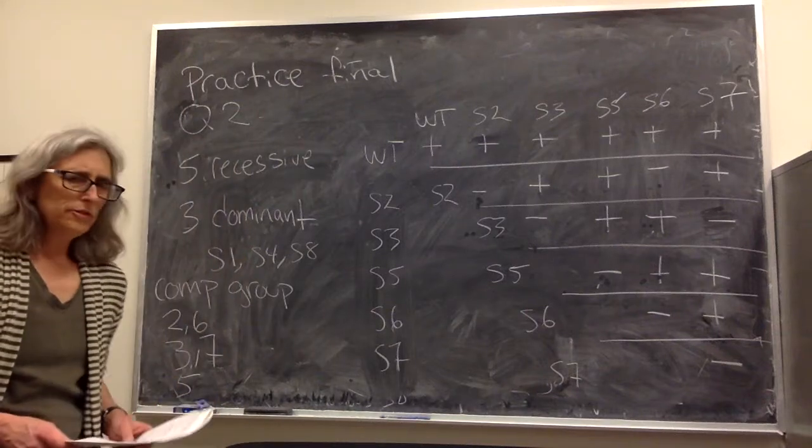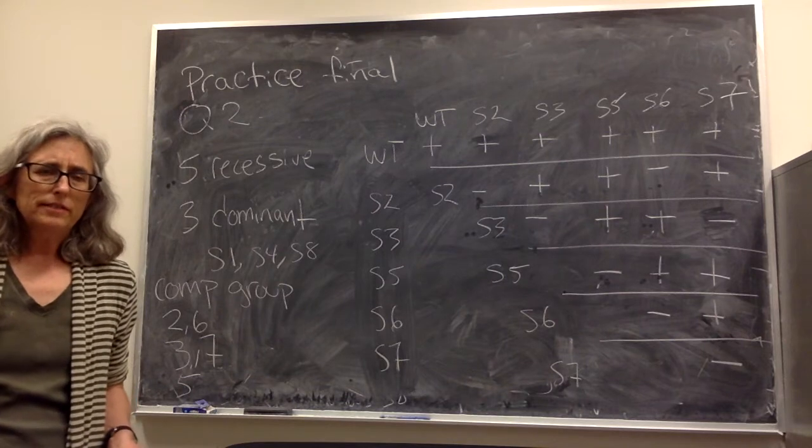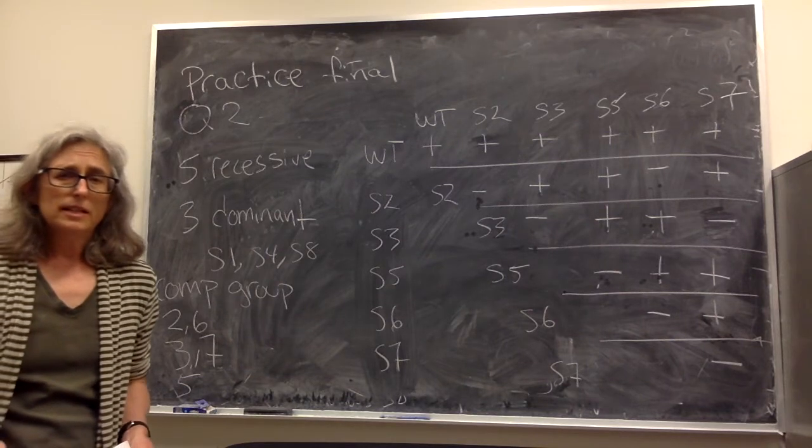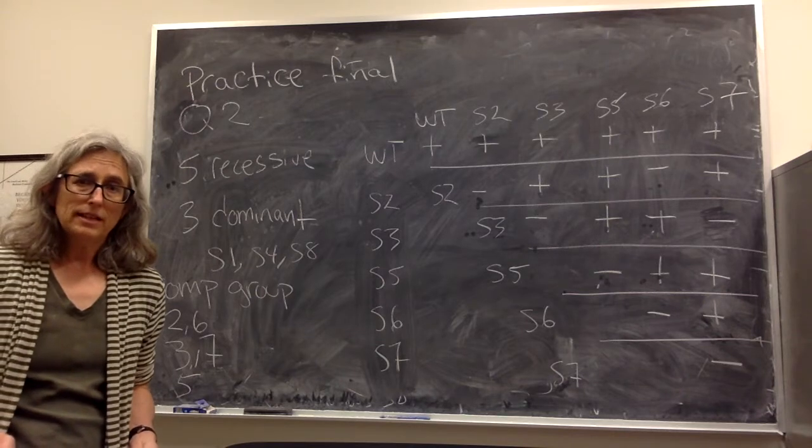Okay, I'm moving on to part C of that same question. So we've done our screen to find our suppressors of variegation and now we want to find out how many genes have we found mutated in our screen.